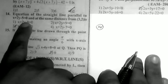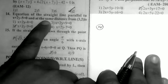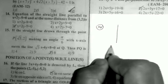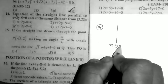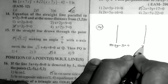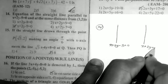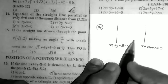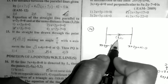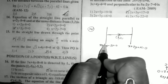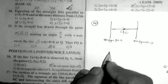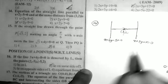Problem 14: Find the equation of the straight line parallel to x + 2y − 5 = 0 and at the same distance from the point (3,2). The equation of a line parallel to the given one is x + 2y + k = 0. The condition is that the two lines have equal distance from the point (3,2), so we find both distances and equate them.